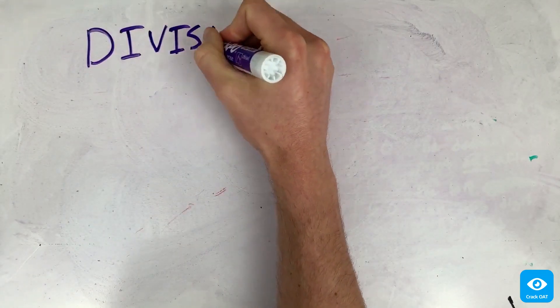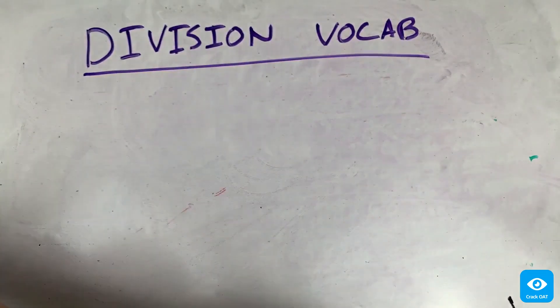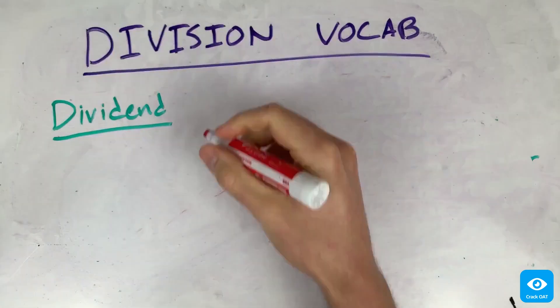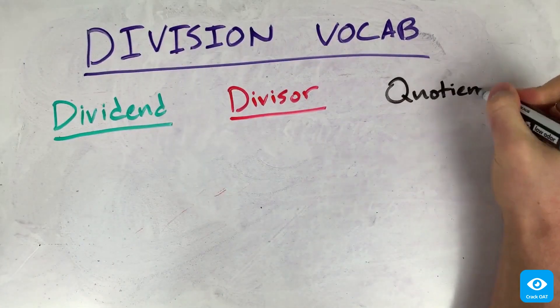Let's start off by getting some vocab out of the way. There are three parts to a division. There's the dividend, the divisor, and the quotient.